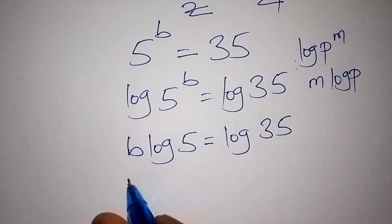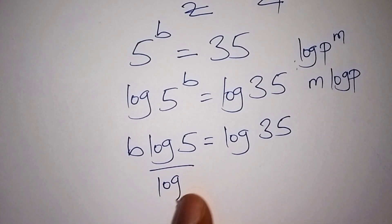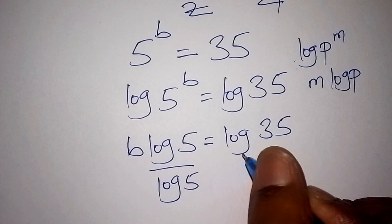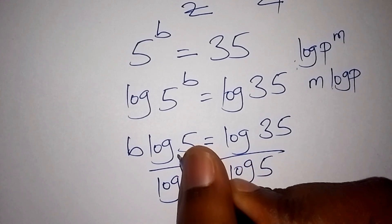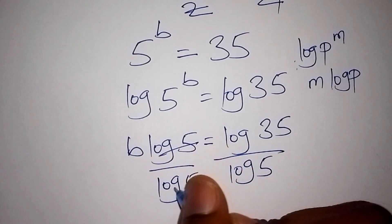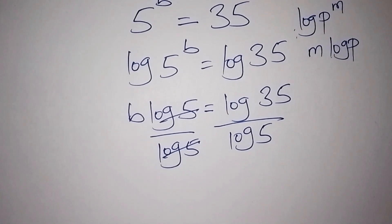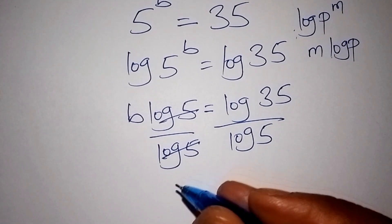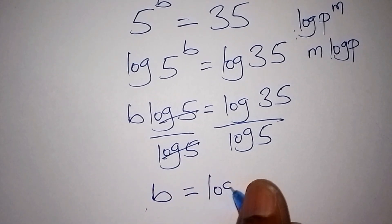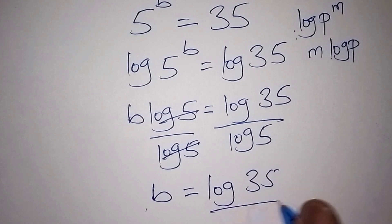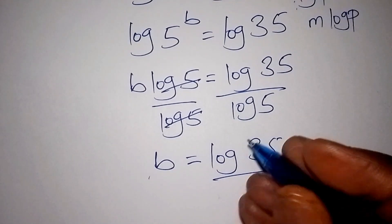For us to remain with b on one side, we shall divide both sides by the log of 5. So the log of 5 and the log of 5 shall cancel each other, and now we shall remain with b is equals to the log of 35 all over the log of 5.